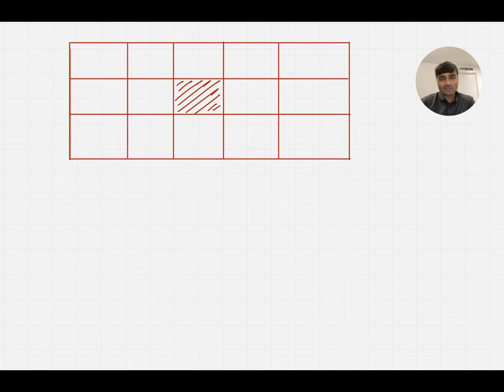We've got a 3 by 5 chocolate bar like so and we've got two players, player A and player B, and they're going to take it in turns one by one snapping this chocolate bar down either one of these vertical lines or one of these horizontal lines, and they're going to go back and forth starting with player A.